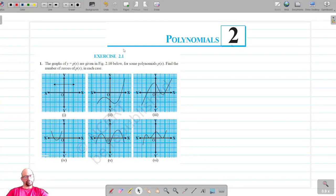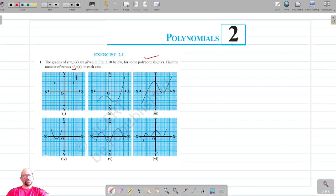Welcome to Prasam Scientific Academy classes. We are on exercise 2.1, question number one. We are given graphs of y equals p of x for some polynomials p of x. We have to find the number of zeros of p of x in each case.